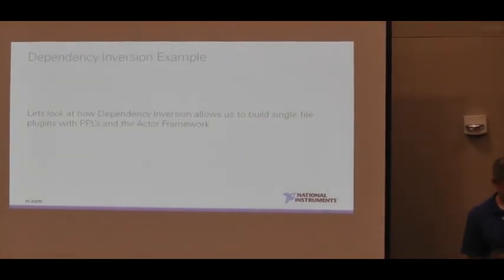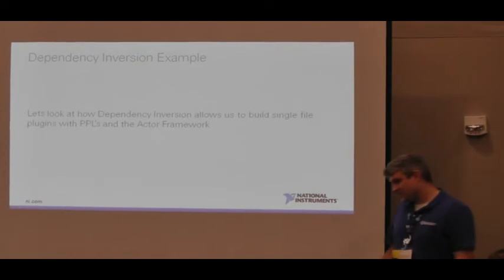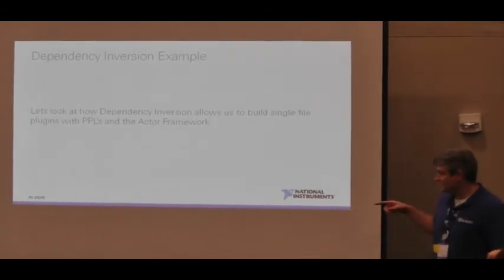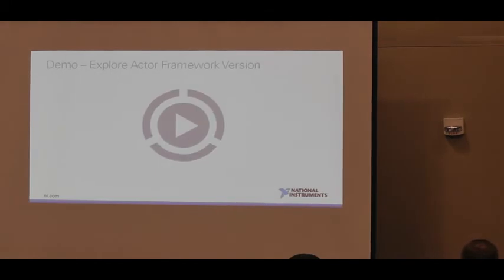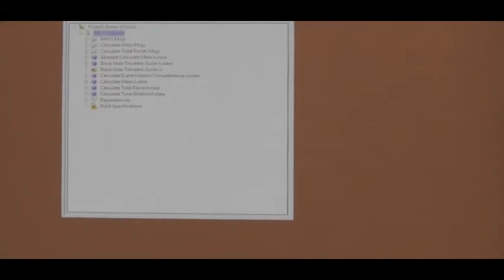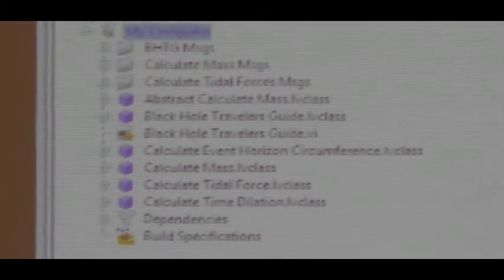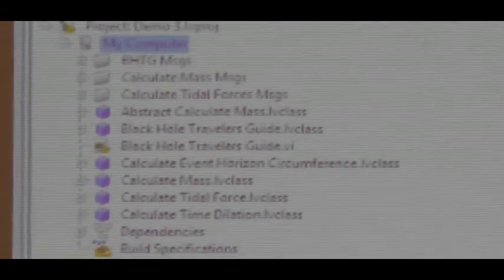So let's look at how dependency inversion allows us to build an Actor Framework application. If you saw my demo in the expo, I actually used PPLs to write an Actor Framework application and it wouldn't work without dependency inversion. The Actor Framework presents us with an interesting coupling challenge: when we create a standard message class, that message class has a do method and a send method. The way you communicate between actors is actor A calls send from the class and actor B has a method inside do. So they're coupled because of the message class. How do we decouple these things?